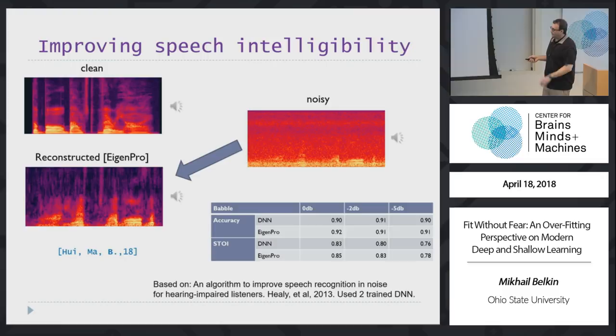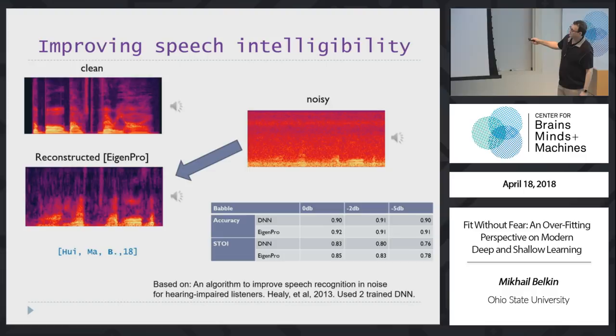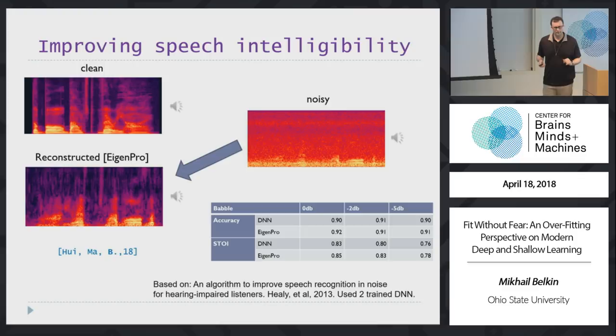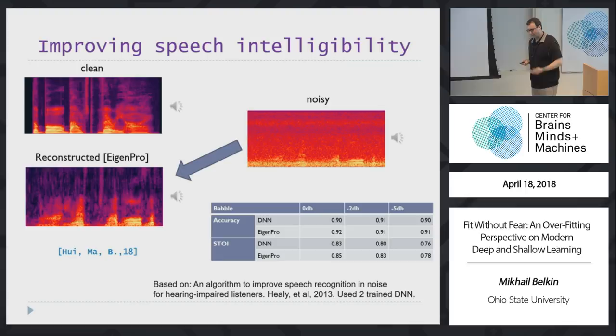In very recent work, we can easily match deep neural network results on speech intelligibility tasks. Clean speech can be reconstructed from noisy speech, posed as a classification or regression problem. The results we get are out of the box and not particularly difficult to tune, while the neural network we match against uses a rather complex architecture — and we use a single parameter. So if you can address the computation issue, you do get good results with kernel machines, shallow networks.